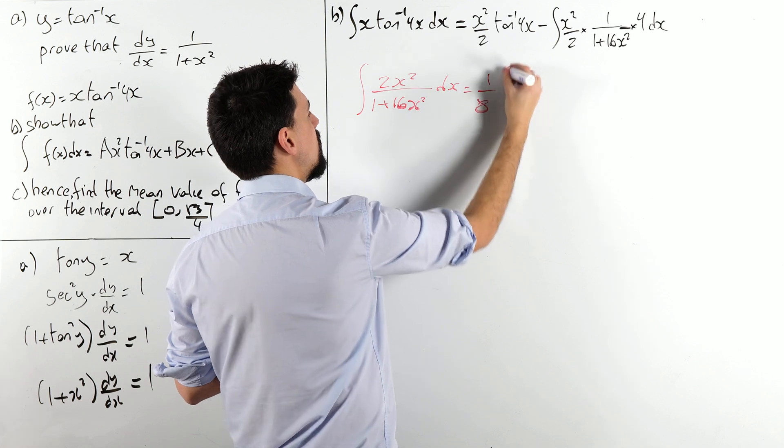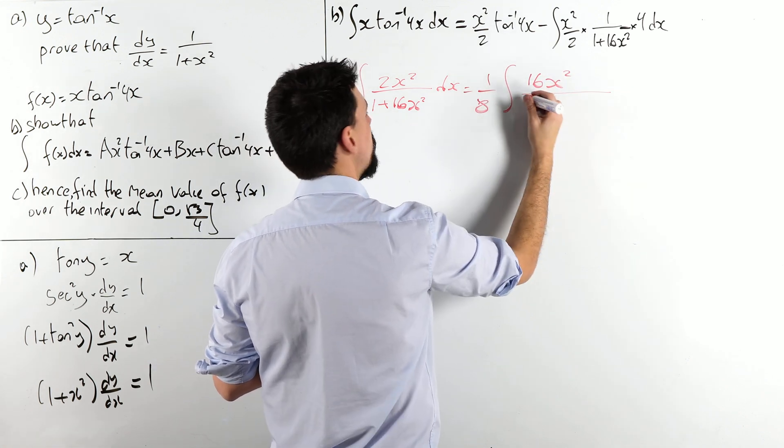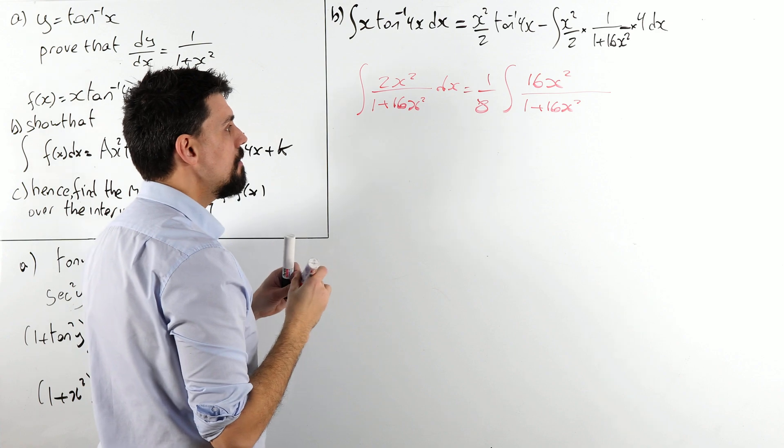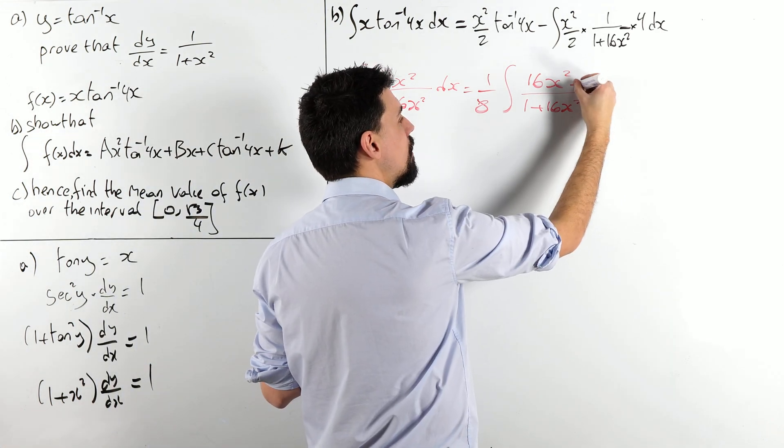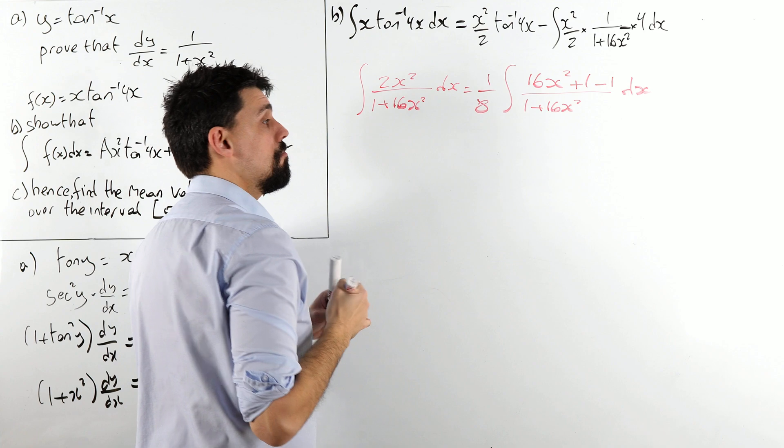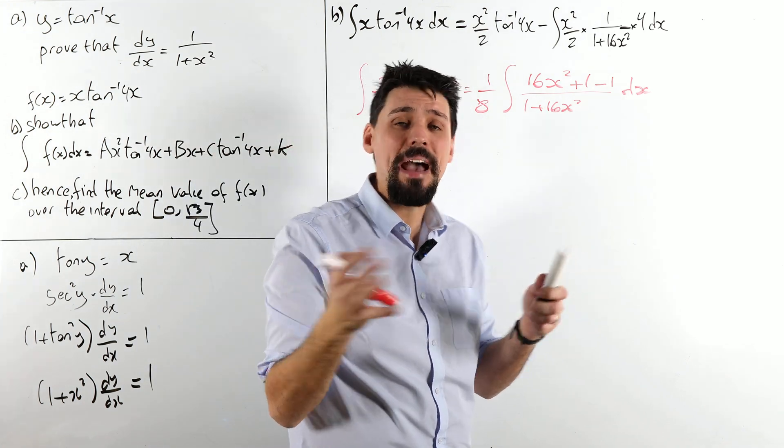So, divide by 8 and times by 8. So, that's already good, because now I've got the 16x squared. What I kind of like is the plus 1. So, I'm going to add in a plus 1 and take away a 1.